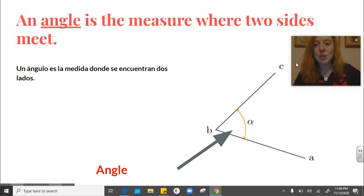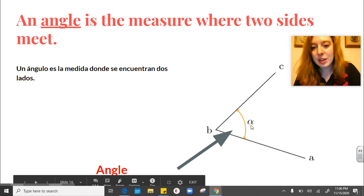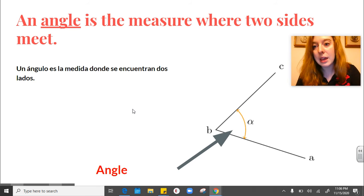Okay. An angle is the measure where two sides meet. So right here, this is an angle. This side and this side are meeting each other. Both of these line segments are meeting each other to make an angle.